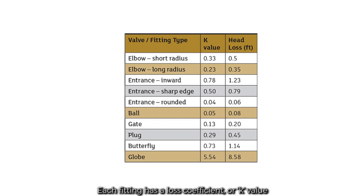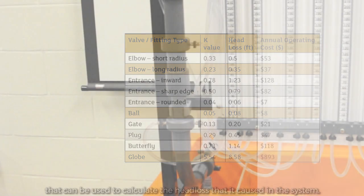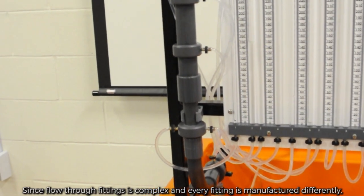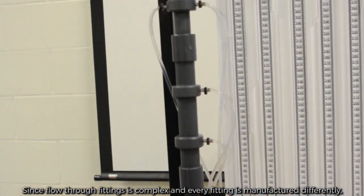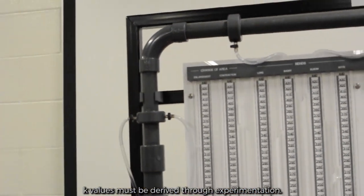Each fitting has a loss coefficient, or k-value, that can be used to calculate the head loss that it caused in the system. Since flow through fittings is complex and every fitting is manufactured differently, k-values must be derived through experimentation.